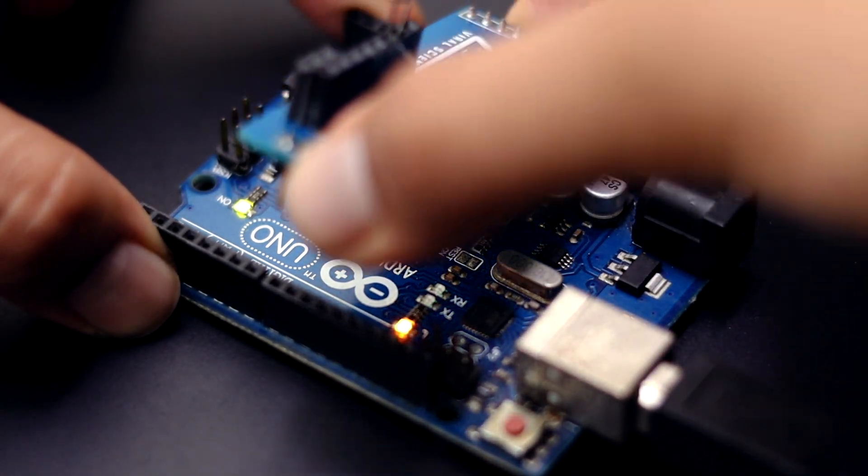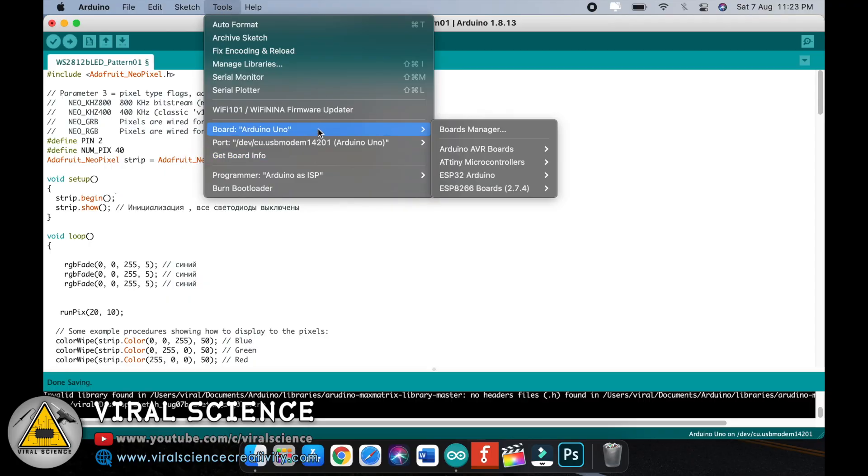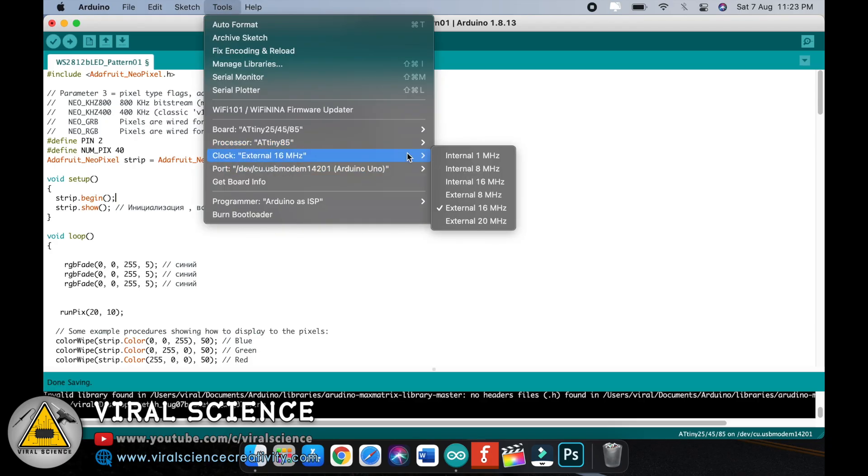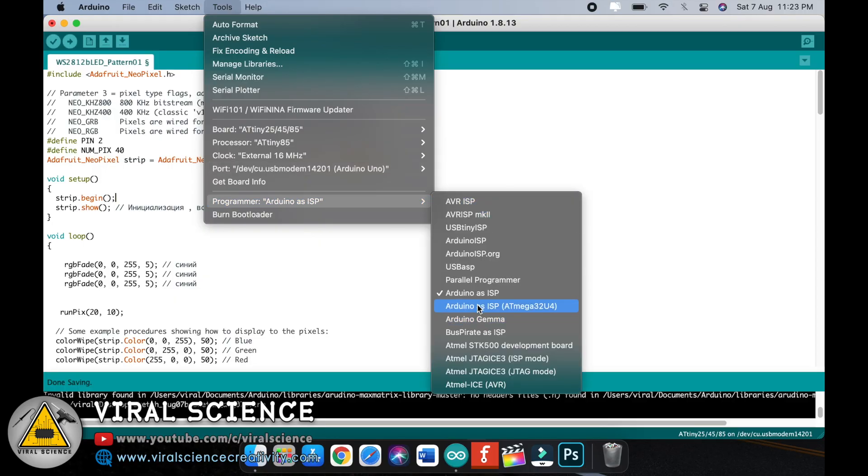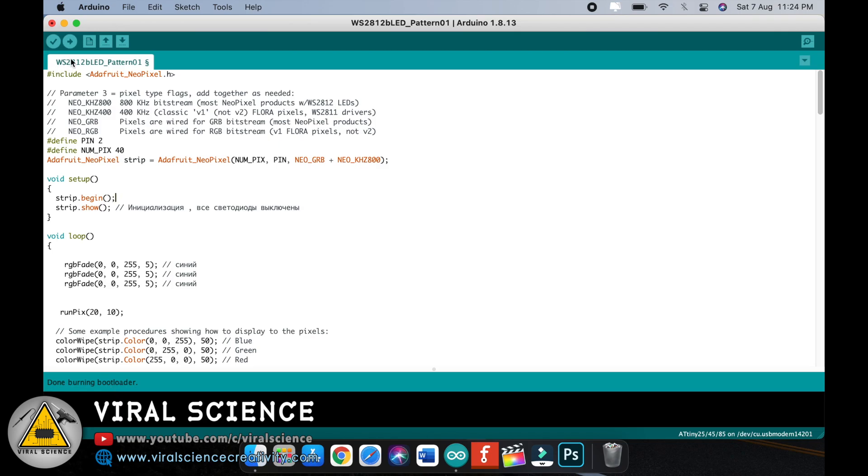After uploading the code, connect the PCB to the Arduino Uno board. Now open our code, select the board as ATiny85, select external 16MHz crystal oscillator, select the port, and select Arduino as ISP. Click on burn bootloader. After it's done, click upload and it will upload the code to the ATiny85.